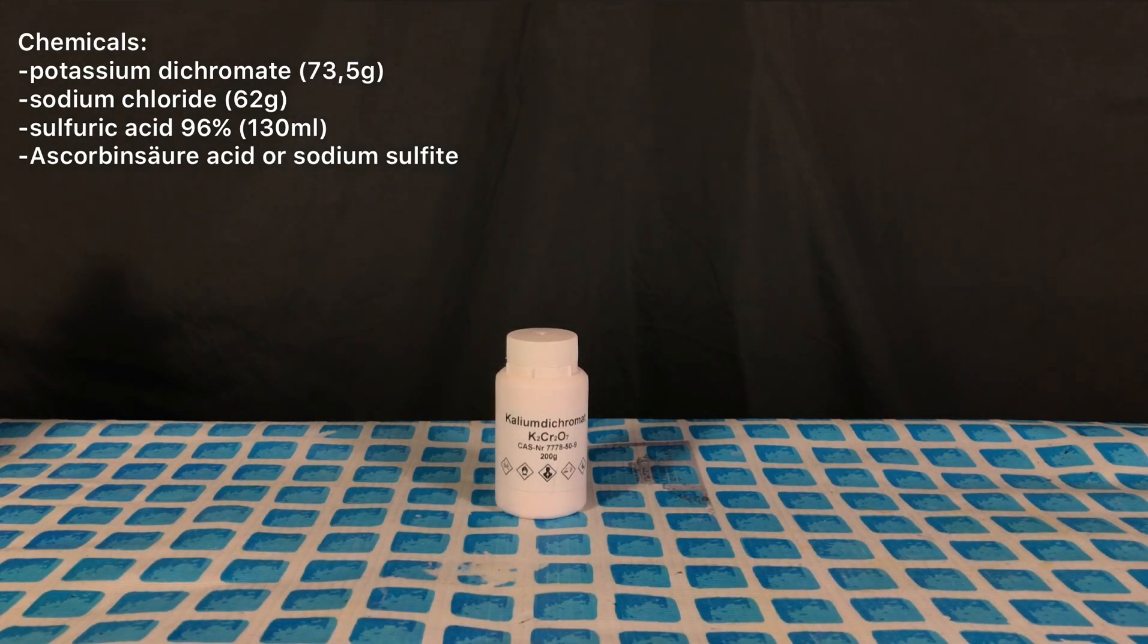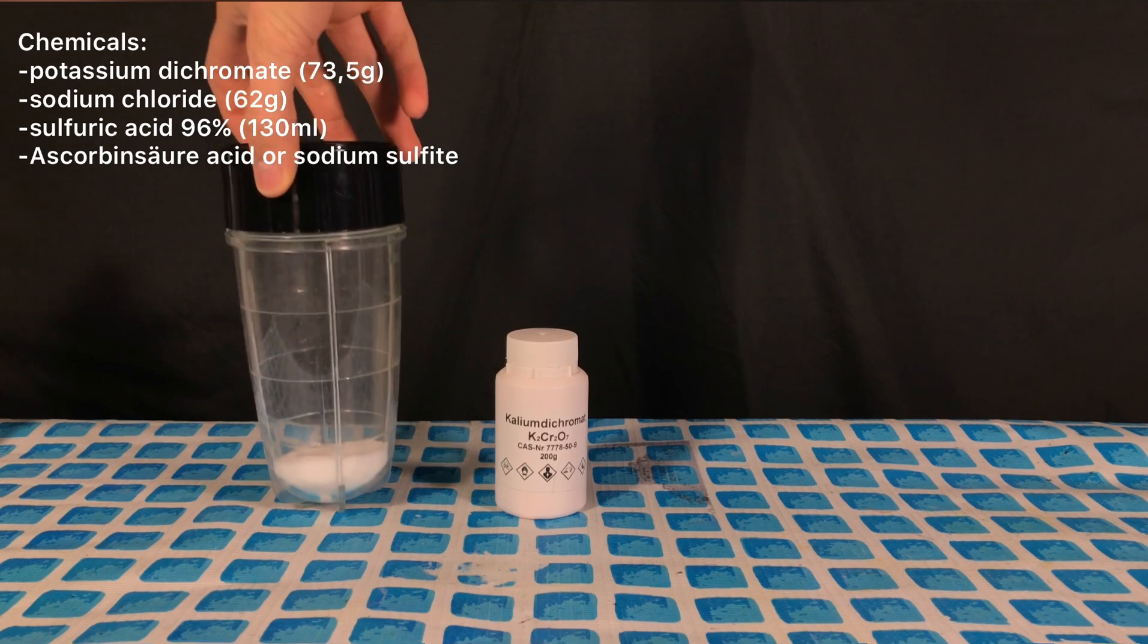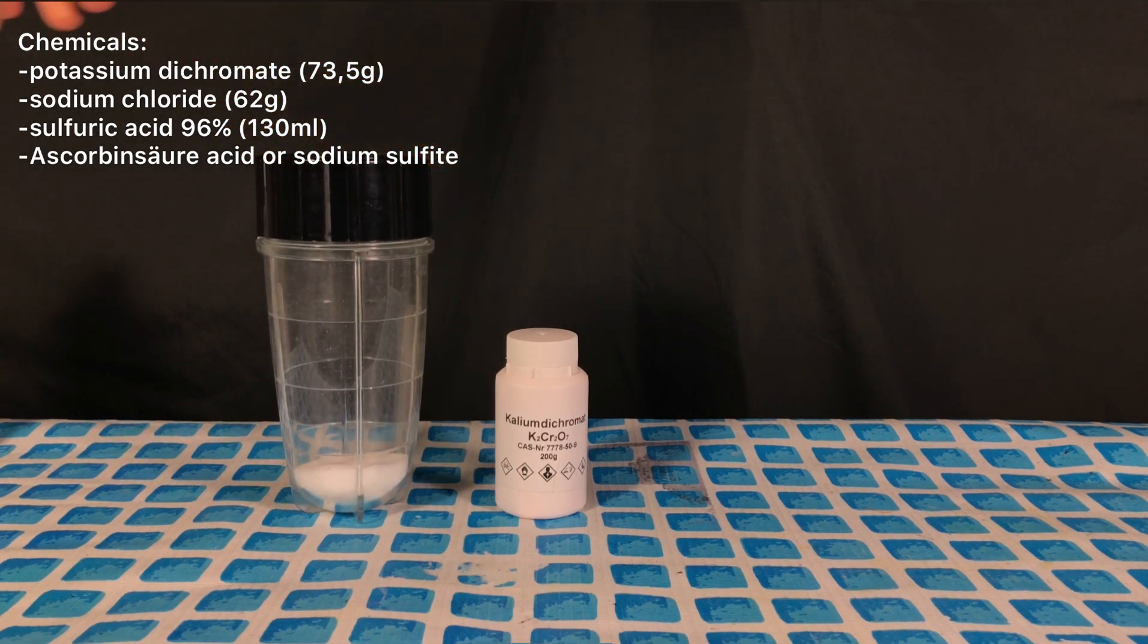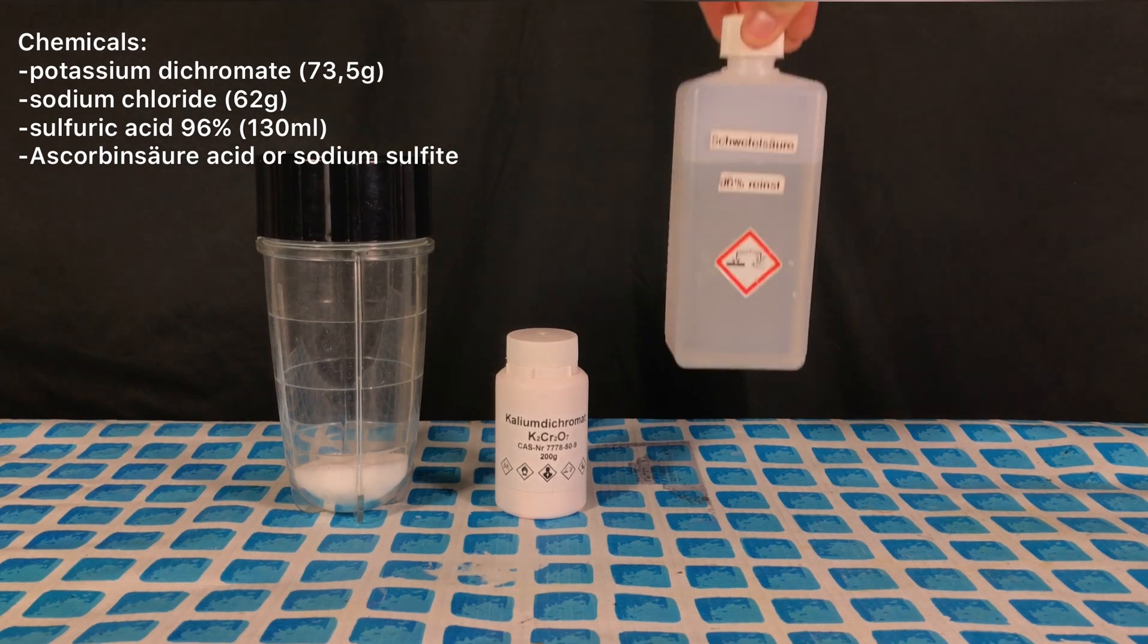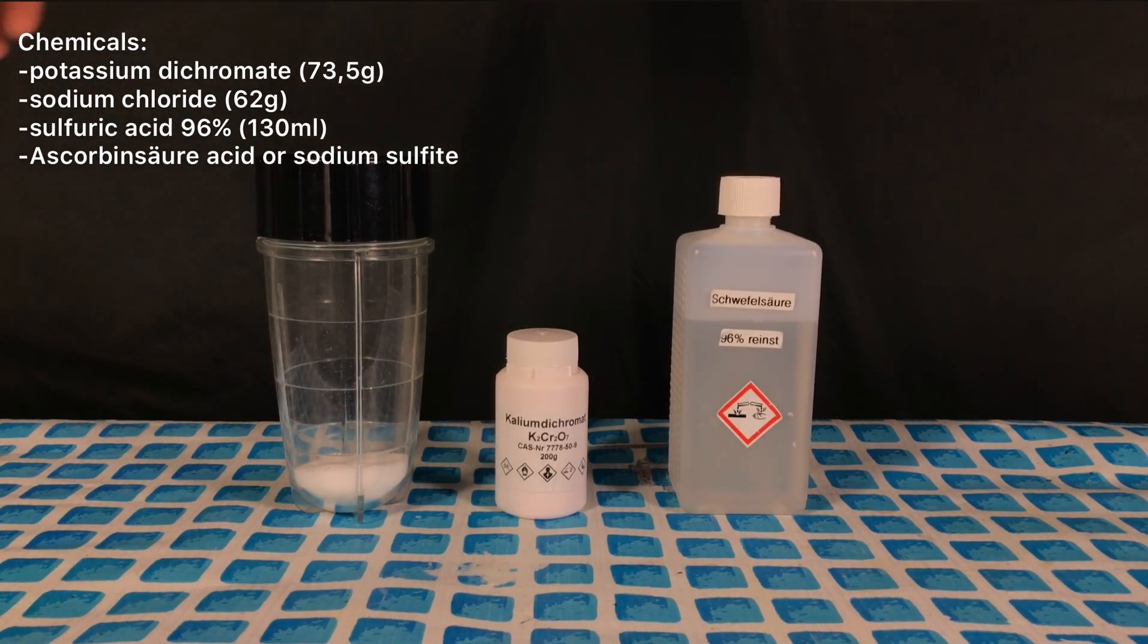Welcome back everyone, today we are going to make chromyl chloride. For this, 73.5 grams of potassium dichromate, 62 grams of sodium chloride and 130 milliliters of sulfuric acid were used.